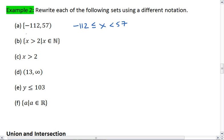For part B, X is greater than 2, such that X is an element of the natural numbers. Okay, this means we start with the first number greater than 2, which is 3. And X is greater than 3, so we're going to just continue counting up. And that is our set of numbers.